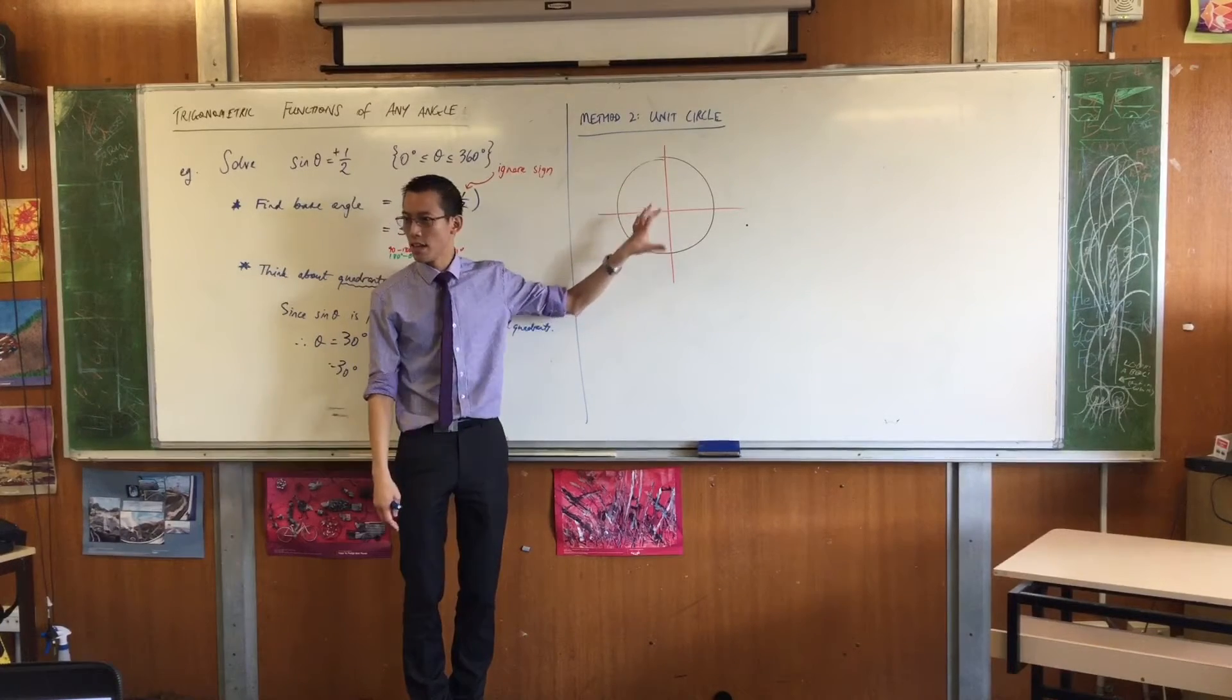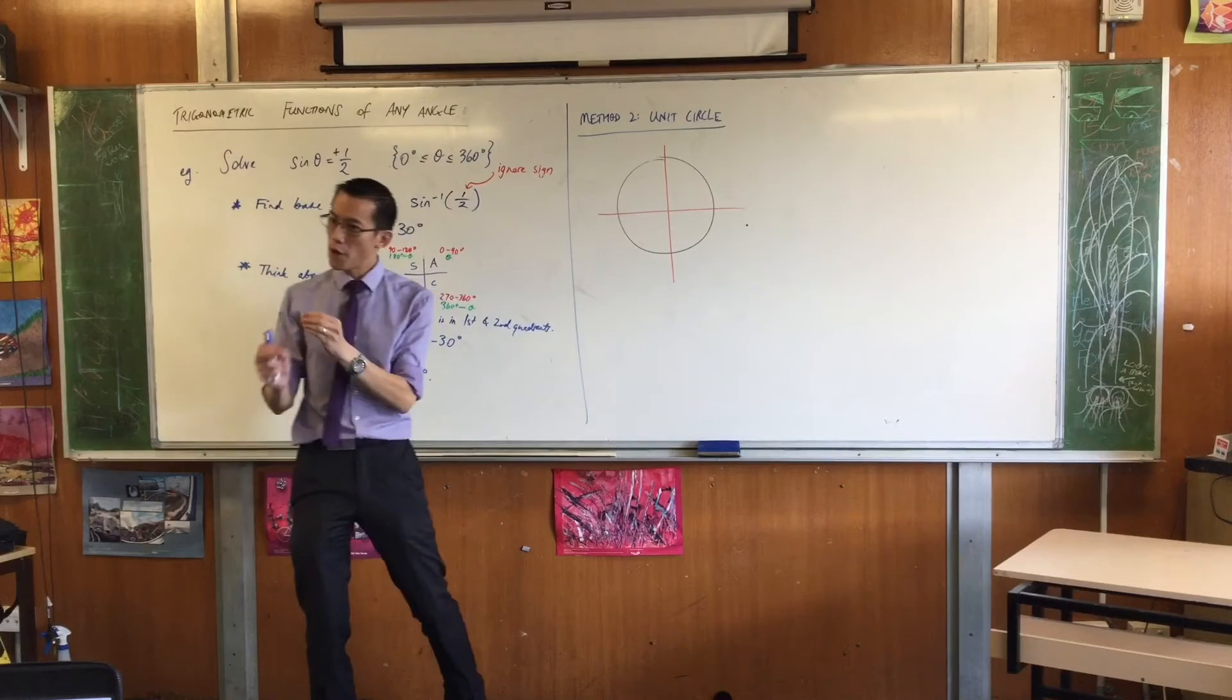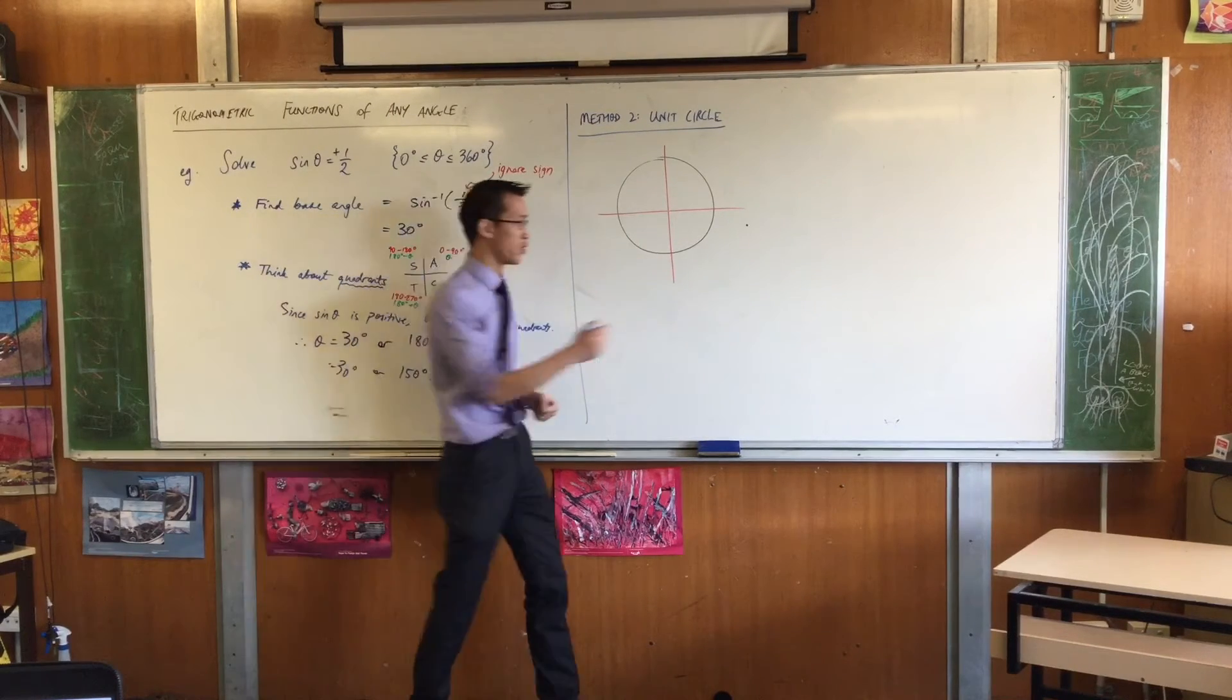Sine, cos, and tan just refer to, specifically, sine and cos. They refer to something about the coordinates on the circumference of the unit circle.